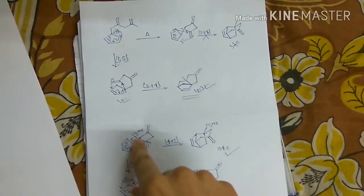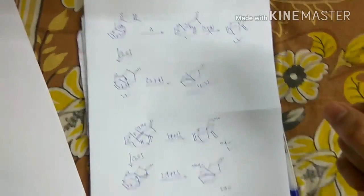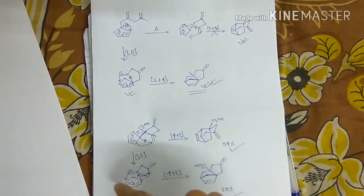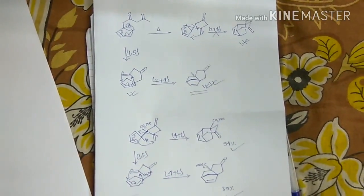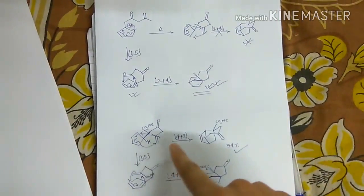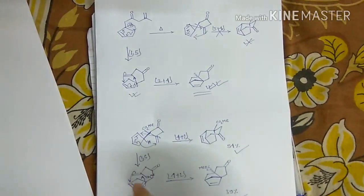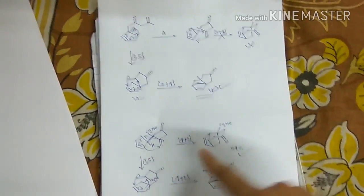So when we put an electronegative group on dienophile, it increases the reactivity of the dienophile towards this diene. And the increasement of the reactivity is to the extent that in this case the Diels-Alder reaction becomes faster than the sigmatropic shift.